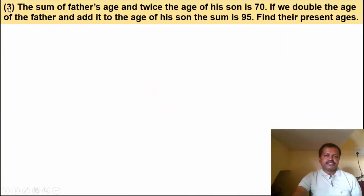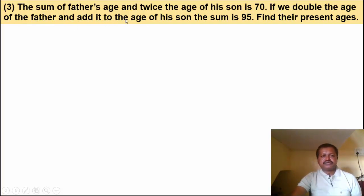Question number 3: The sum of father's age and twice the age of his son is 70. If we double the age of the father and add it to the age of his son, the sum is 95. Find their present ages.